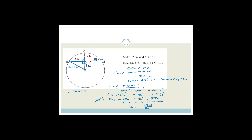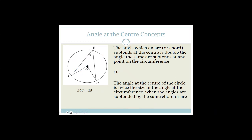But they didn't ask for X — they asked for OA. OA = X + 12 = 18 + 12 = 30 centimeters.